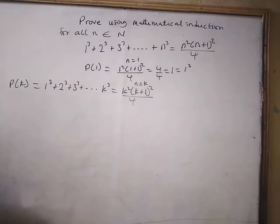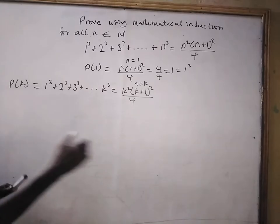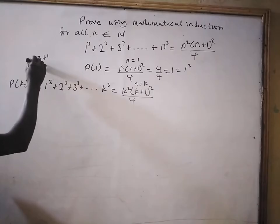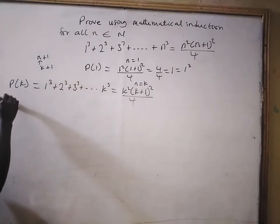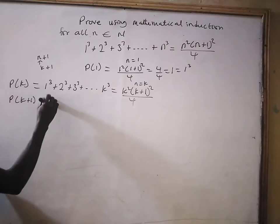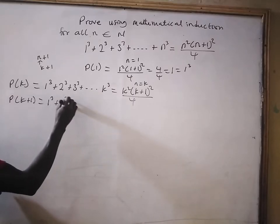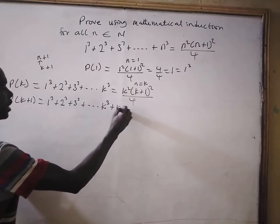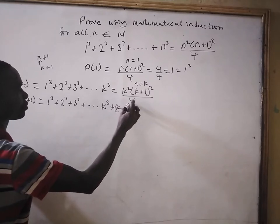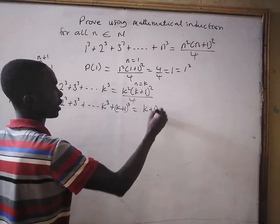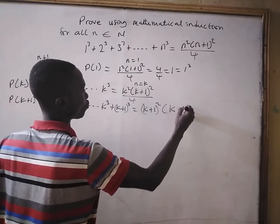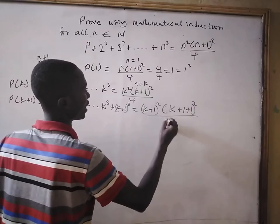Now, using this assumption, we are going to prove that P(k+1) is also true. That is, for n plus 1, replacing n by k, we prove that: 1³ plus 2³ plus 3³ plus dot dot dot plus k³ plus (k+1)³ equals (k+1) squared times bracket (k+1) plus 1 all squared divided by 4.